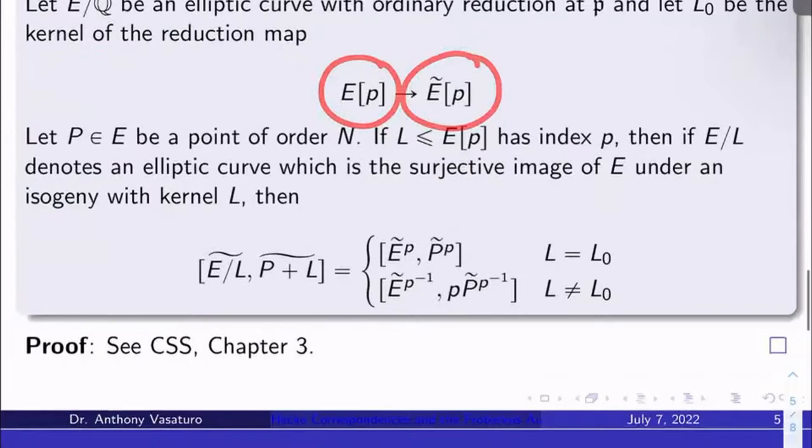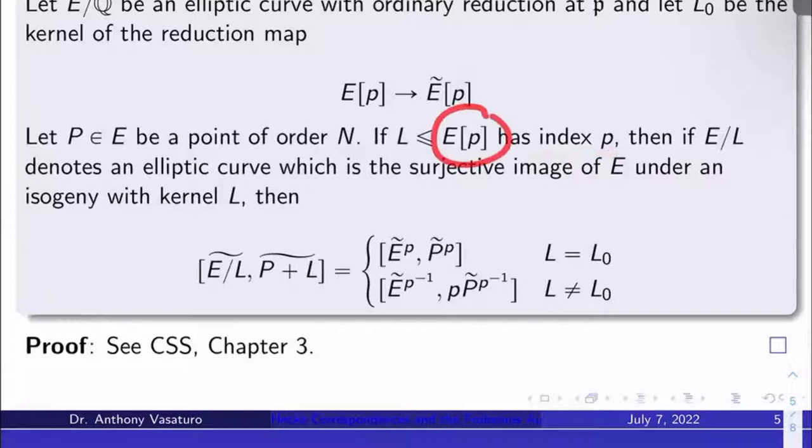Let's let P in E here be a point of order N. So it's in the N-torsion. Let's let L be a subgroup of index or order p, if you like inside the p-torsion of E, so any subgroup of index or order p, it might be L₀, it might not be.